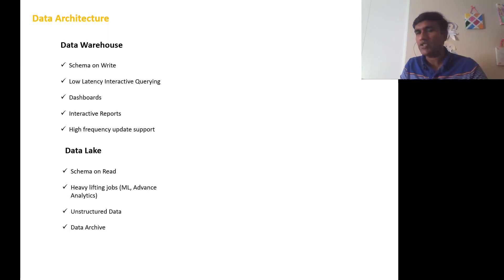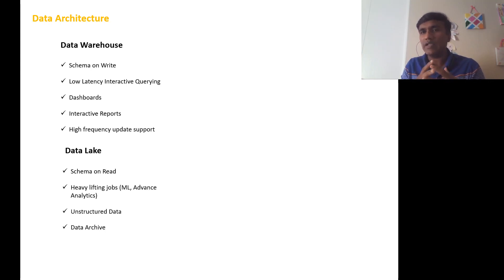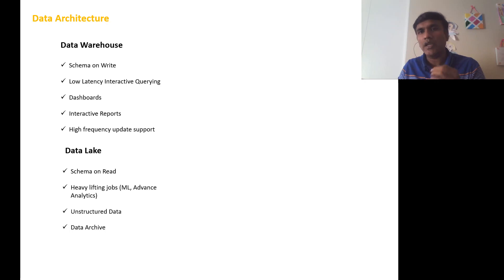So this is about data architecture. In the second part, we will talk about the multiple source systems we spoke about — how the data may come in batch, in real time, or API-based — and how we can collect that data and use it in a machine learning model. Please subscribe to the channel AI Engineering if you want to get updates. Thank you very much.